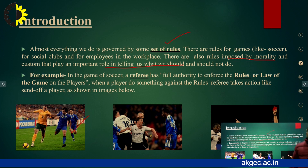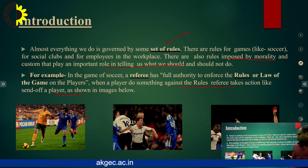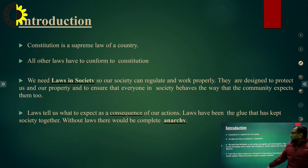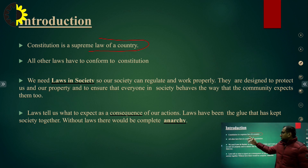When a player does something against the rules, the referee must take action. A red card means the player has to leave the field. This is something the constitution also does. The constitution is the supreme law of the country — also called a Bible, Gita, or Granth — in which every citizen of India, every government, citizen, and company must follow a set of rules defined by the constitution, and all other laws have to conform to the constitution.